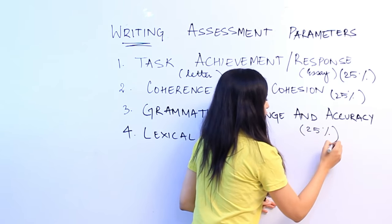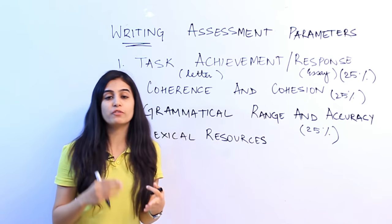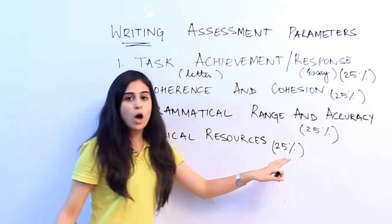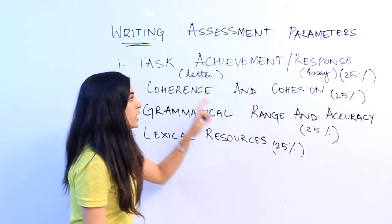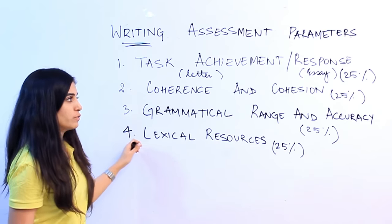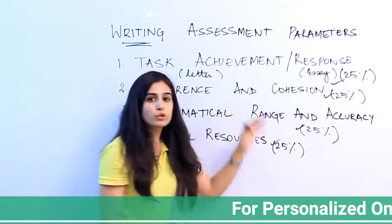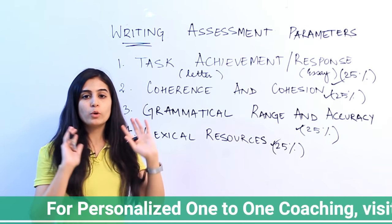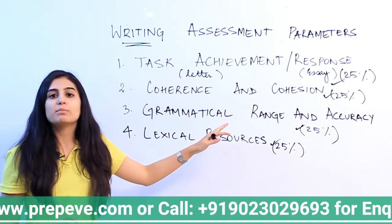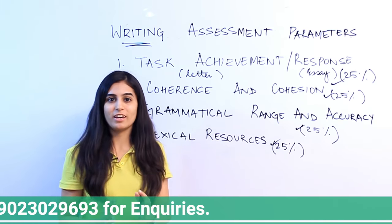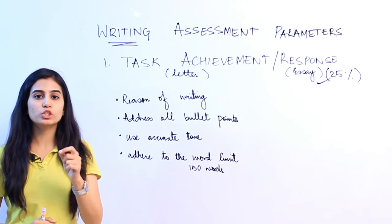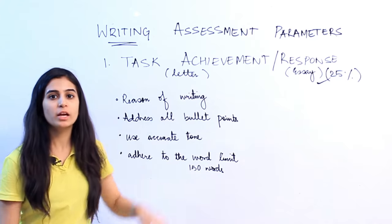Even if you achieve the task at hand — for example, the letter has three bullet points and you addressed all three — but you ignored lexical resources, you lose 25% of your band score. You have to cater to all of these parameters and ace each one. When you incorporate all four parameters in one letter and one essay, the wholesome answer you get will give you the desired band score of at least 7, or 7.5. Let's understand each parameter, starting with task achievement for task 1, the letter.